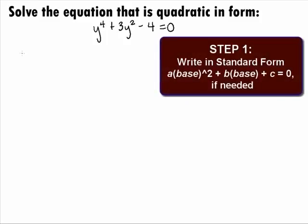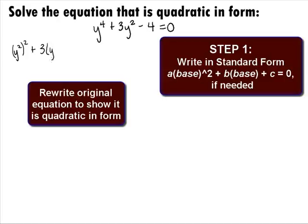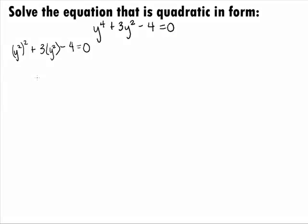In Step 1, we want to write the equation in standard form. An equation is quadratic in form if it can be written as a times some base being squared, plus b times that same base, plus c equals 0. We can think of this as the base of y squared being squared, plus 3 times that same base of y squared, minus 4 equals 0. So it is y squared that is the base that we are working with here.